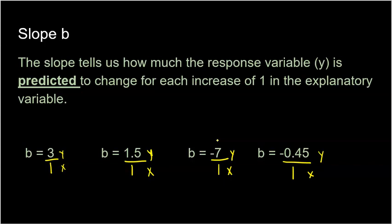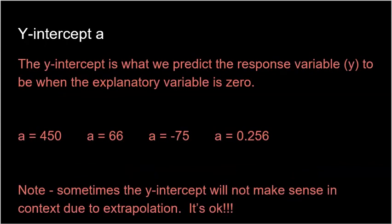You need to understand that you can always make a number a fraction by putting it over 1. The 1 is always the explanatory variable's movement. So for any slope, the explanatory is always increasing by 1, and you just fill in context around that.